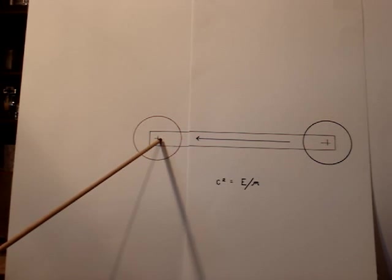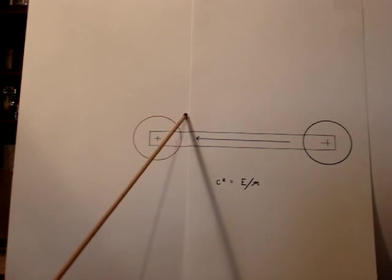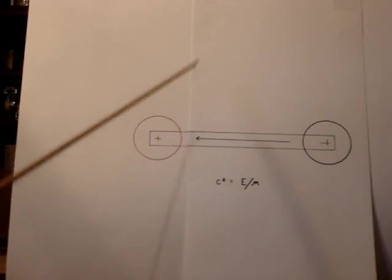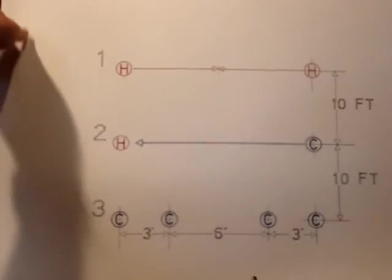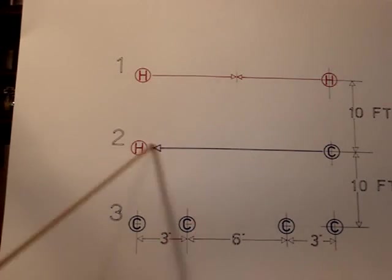And there is a way to prove whether it will work or not. And it is found right back with the experiment. If this is true, and C² equals E divided by M, then a spaceship drive would be able to be made out of the force of gravity.